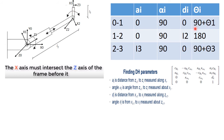For theta: theta1 is the angle from X0 to X1 about Z0. Even if you put the arm horizontally, you still have a 90-degree shift, so theta for frame 1 is 90 degrees plus theta1. X1 to X2 are pointing in opposite directions, so their angle is 180 degrees. For X2 to X3, even in a straight horizontal position X3 is pointing upward, giving a 90-degree shift, so theta3 is 90 degrees plus theta3.